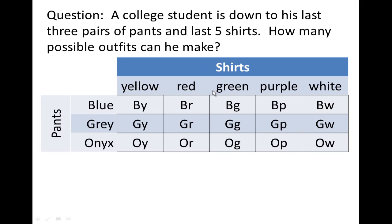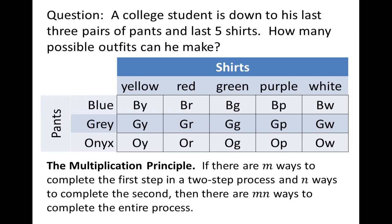In shirts we have yellow, red, green, purple, and white. This chart tells you exactly how many there are — there are 15, because there are three rows and five columns. GP represents gray pants and a purple shirt. We can see that multiplication is taking place: three times five is 15, and this is what's known as the multiplication principle.